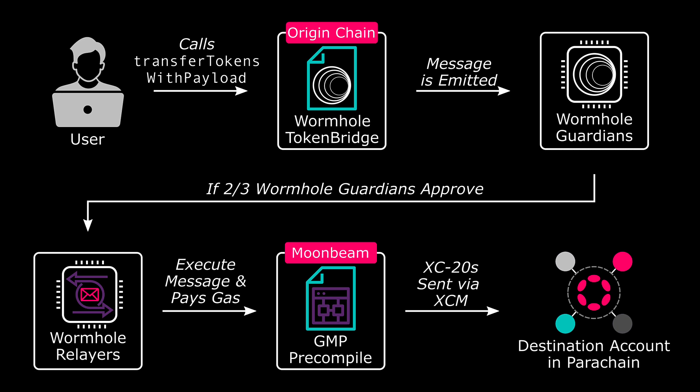On Moonbeam, all ERC-20s can be transferred via XCM, which allows the assets to easily flow to a destination parachain. While MRL intends to encompass many different GMP providers, Wormhole is the first that has been built for the public.